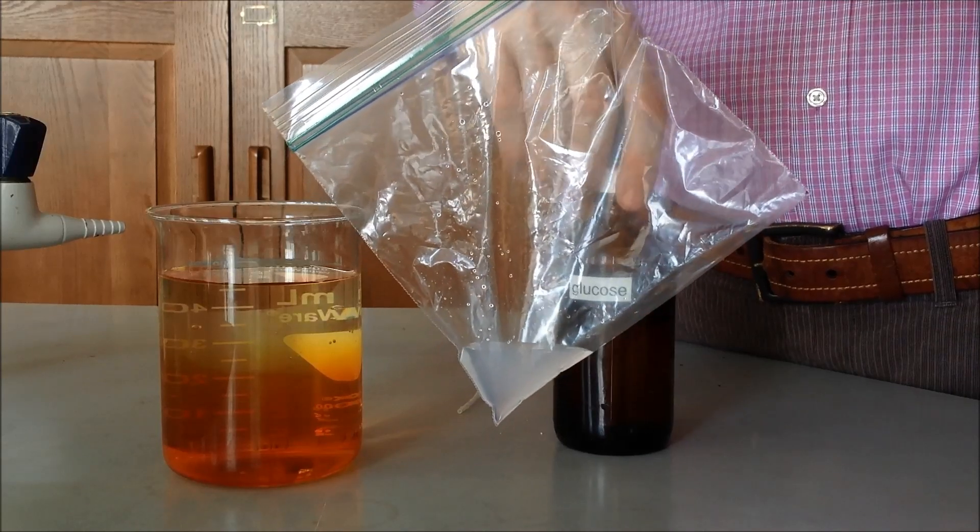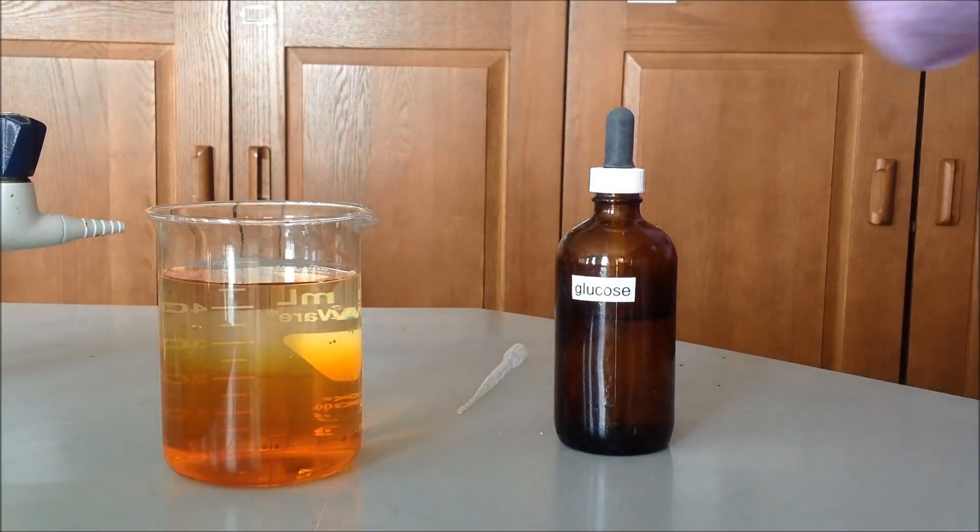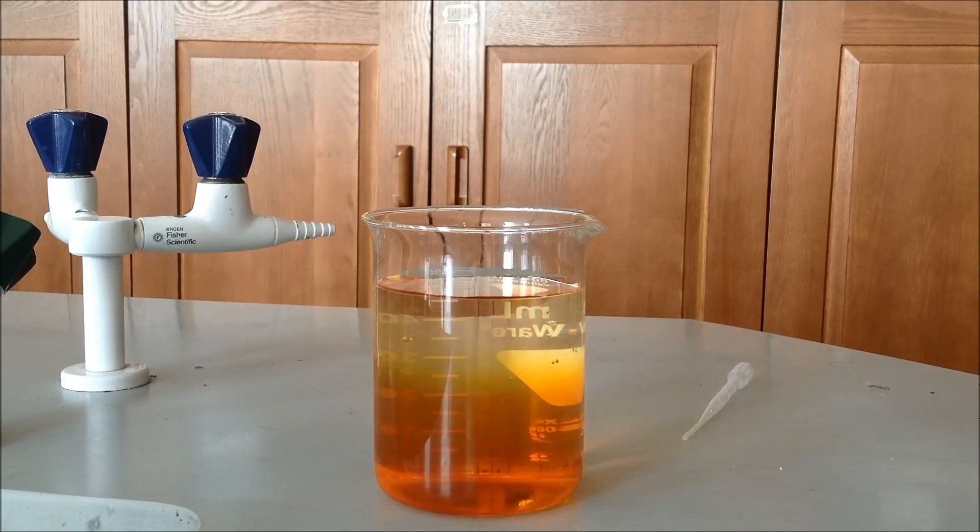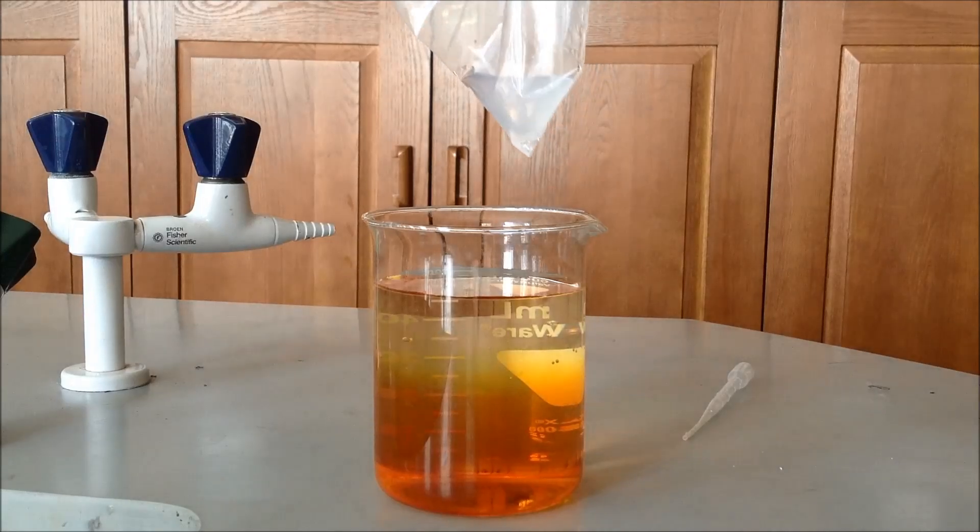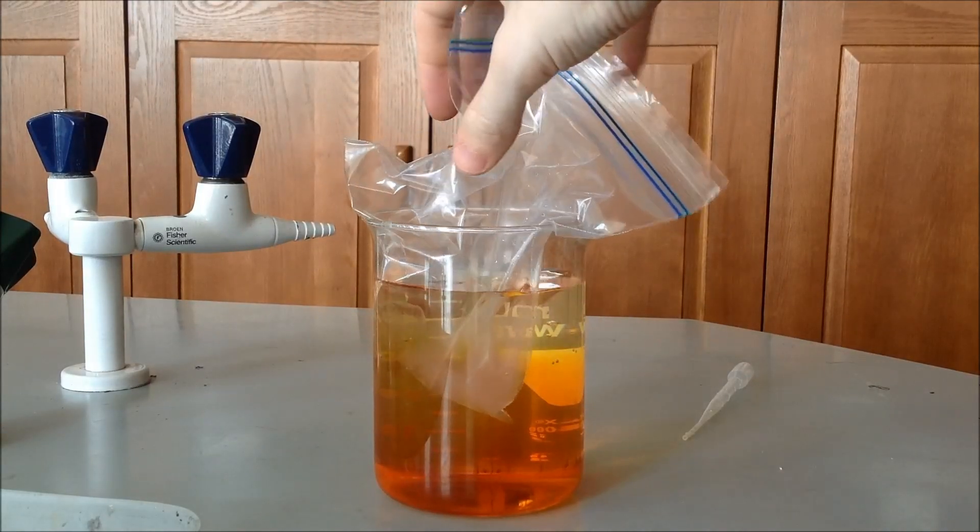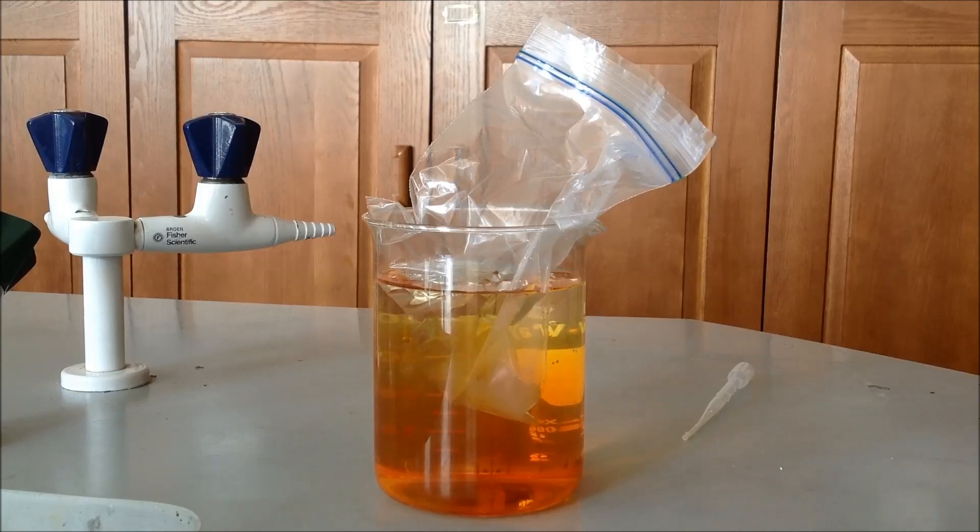Alright, the next step of the procedure is to take the Ziploc bag that has now glucose and starch in it and put it into the beaker with the Lugol's iodine and let it sit for, this one, we actually let it sit for about two hours. And then see what is able to pass through.